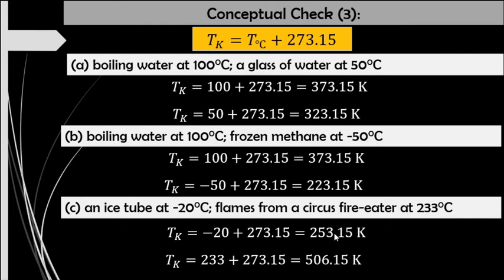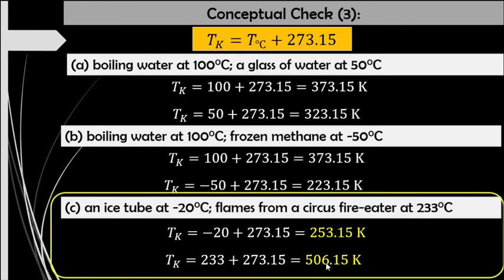We are now given the temperatures in terms of the Kelvin scale. Out of these three pairs, we have to look which pair has temperatures with a ratio of 1 to 2. By inspecting the Kelvin scale temperatures, the pair that has a ratio of 1 to 2 is pair C, because 253.15 is half of 506.15, or 253.15 times 2 equals 506.15. Therefore, our answer is letter C: an ice cube at negative 20 degrees Celsius and the flame at 233 degrees Celsius have temperatures where one is twice as hot as the other.